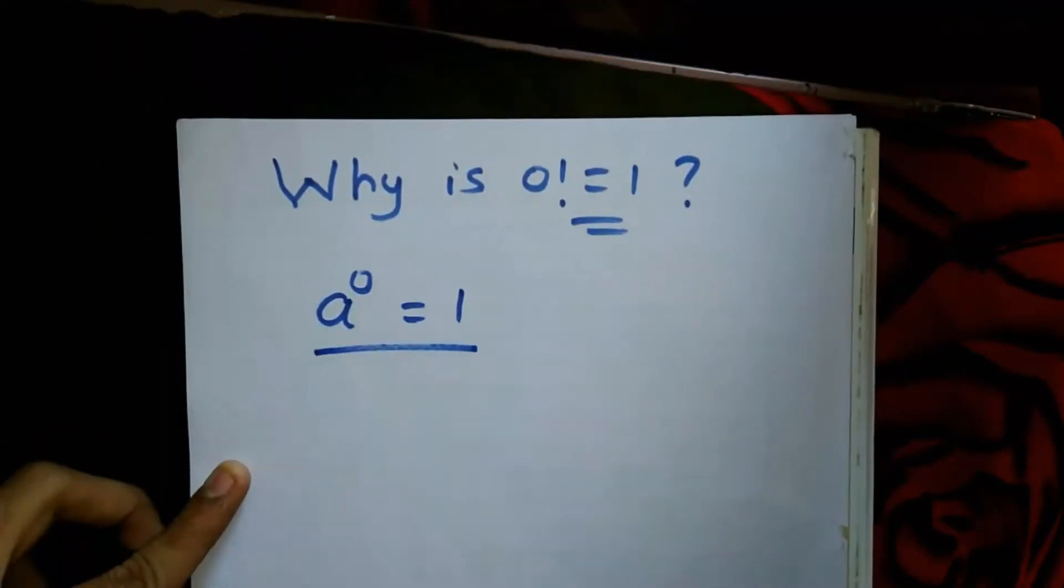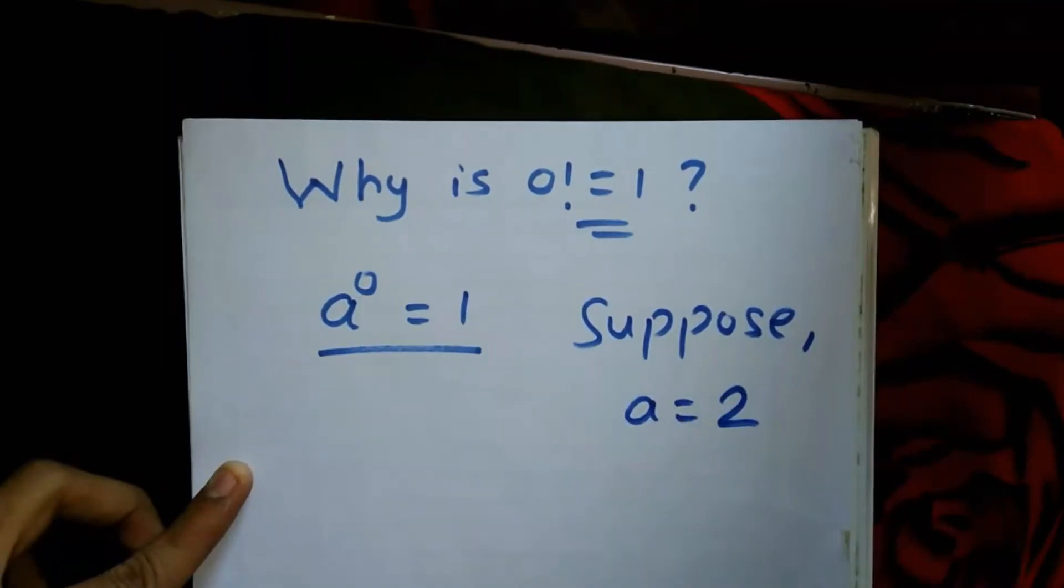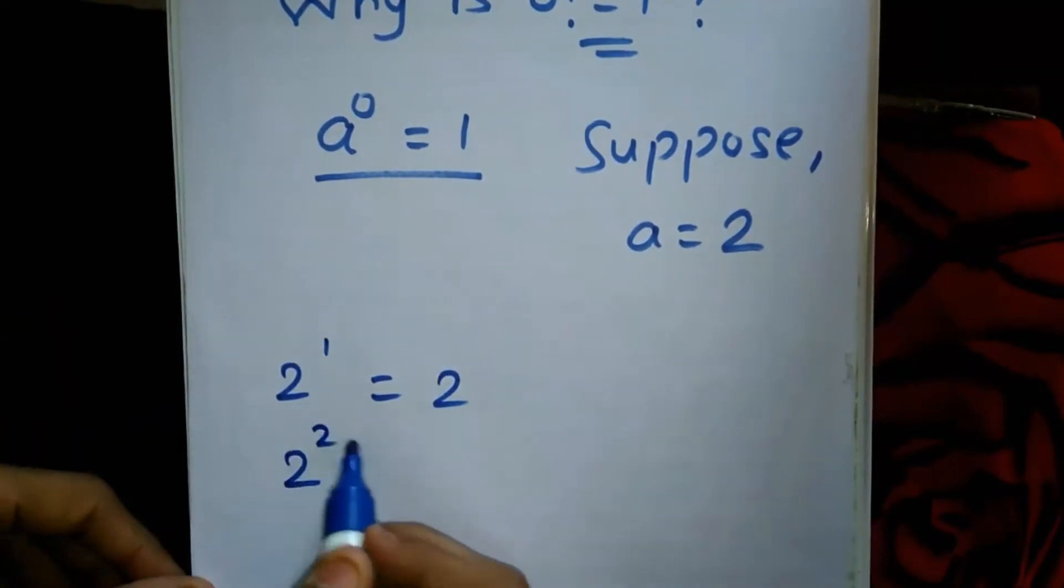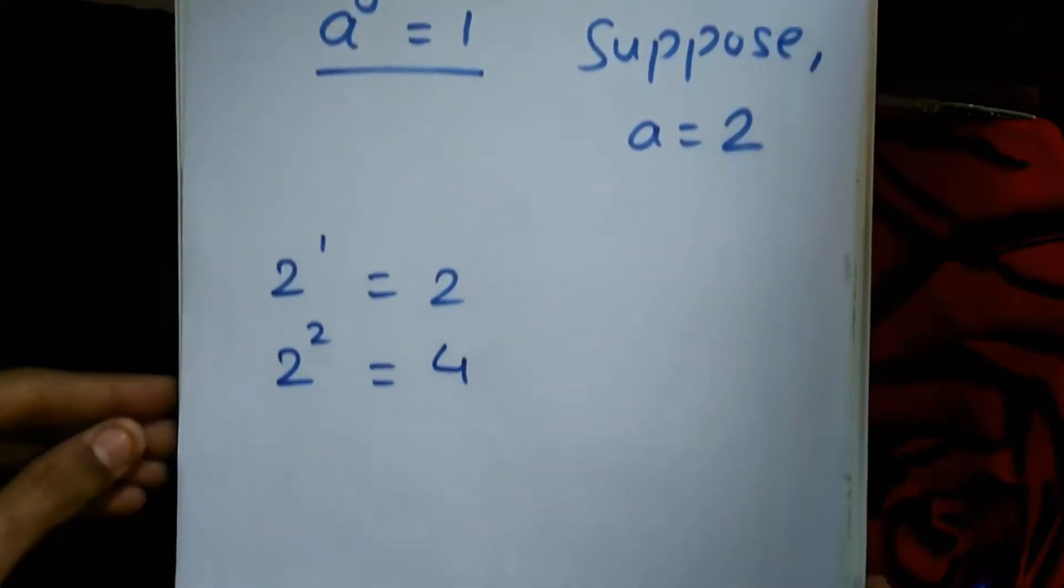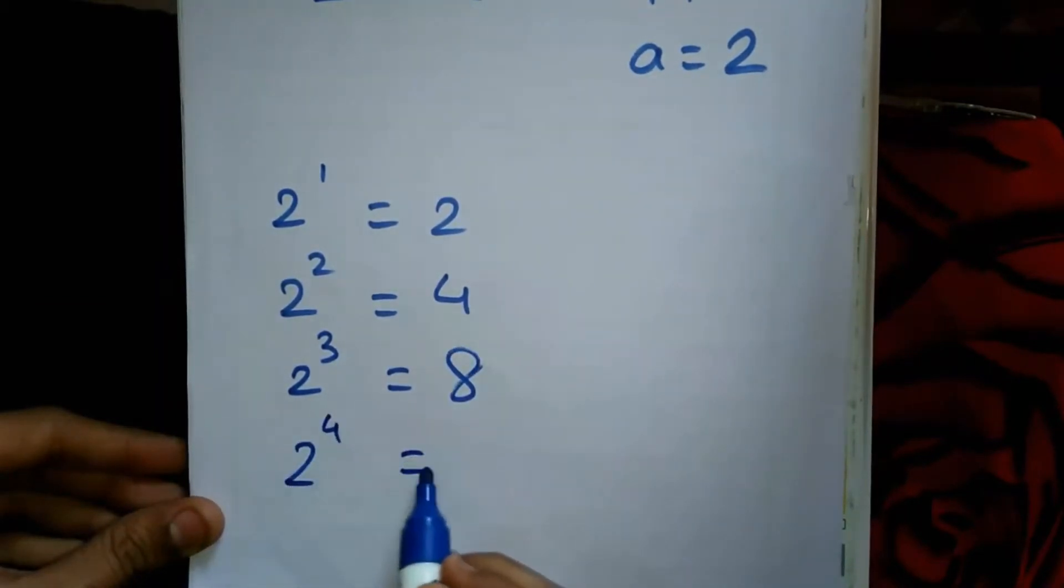As you know, a^0 = 1, but why? Suppose a = 2. We know 2^1 = 2, 2^2 = 4, 2^3 = 8, 2^4 = 16, and the series goes on.